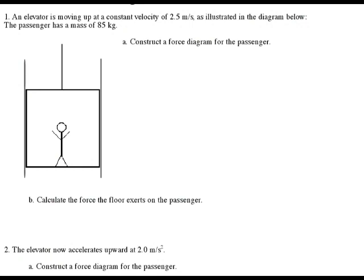Let's go with our classic elevator problem. We have an elevator moving up at a constant velocity of 2.5 meters per second. The first thing we need to do is draw our force diagram. We've got our down arrow, and we call this force gravity from the Earth on the passenger.